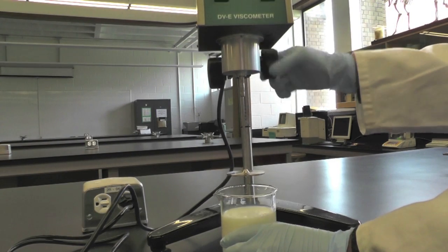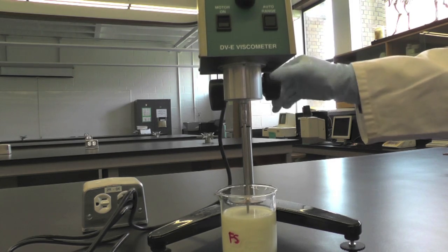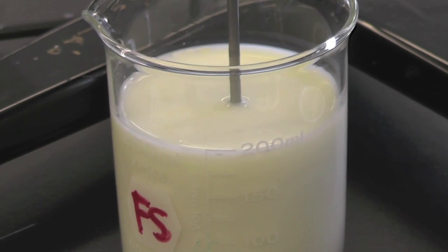The beaker should be large enough for your selected spindle and the amount of your sample should submerge the spindle to the etched mark.